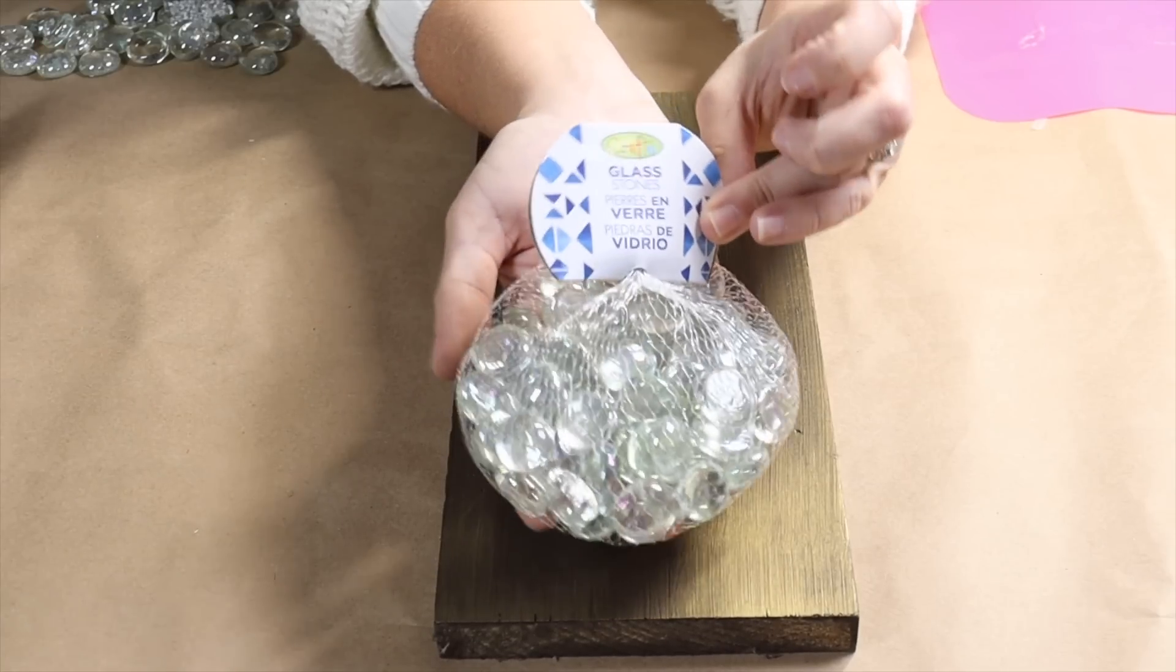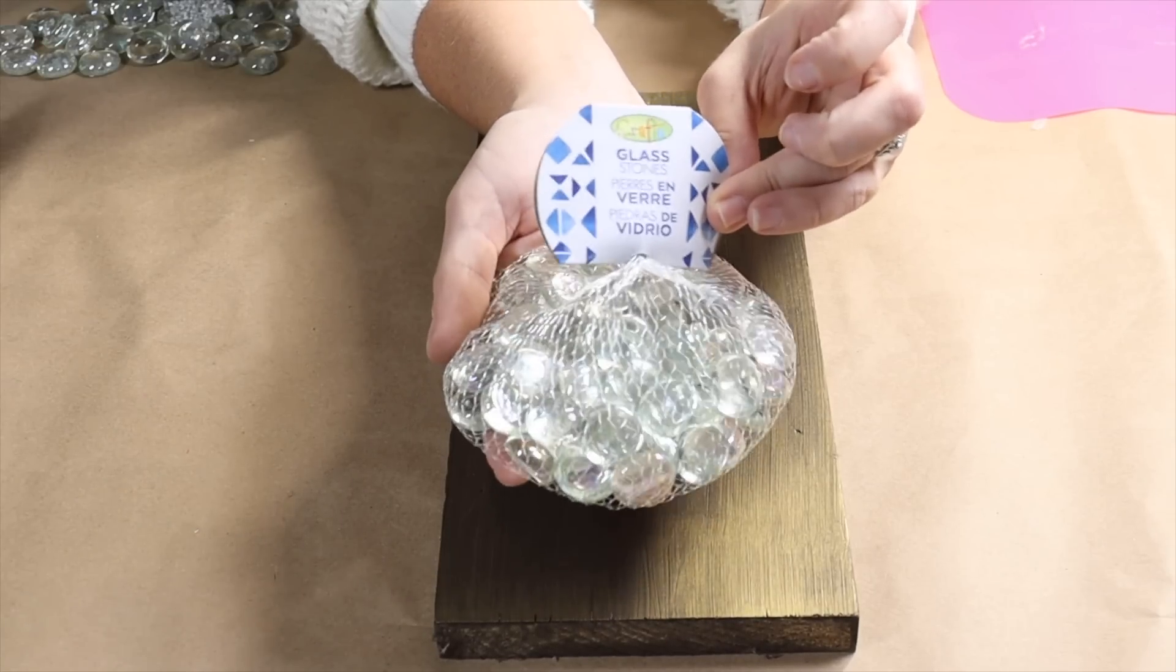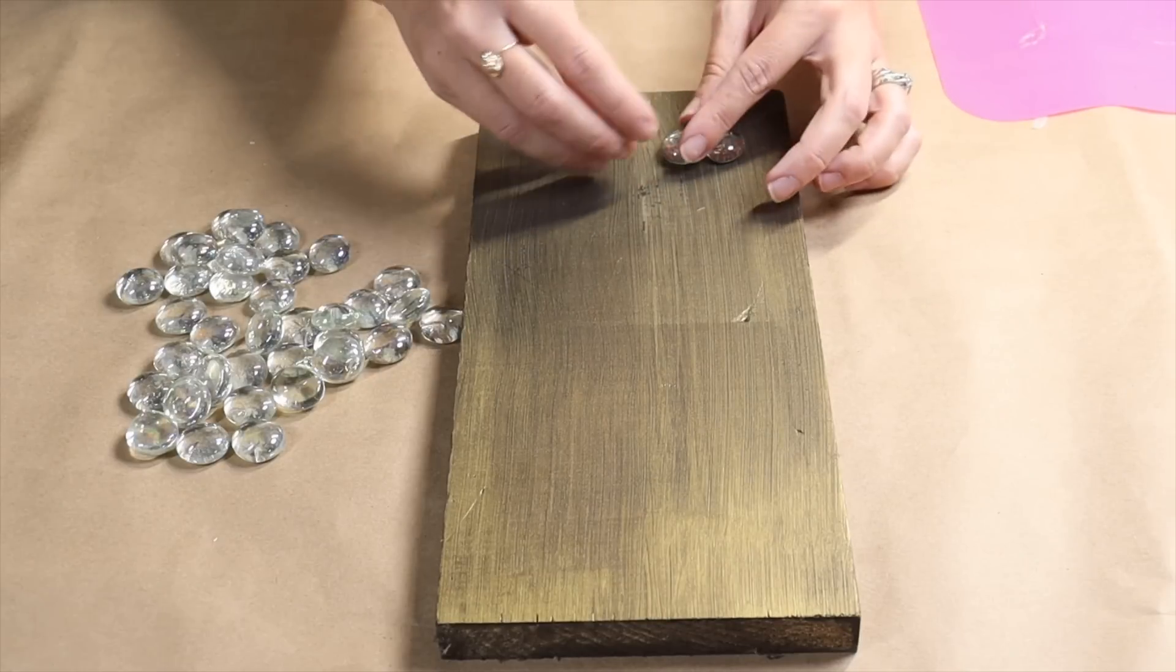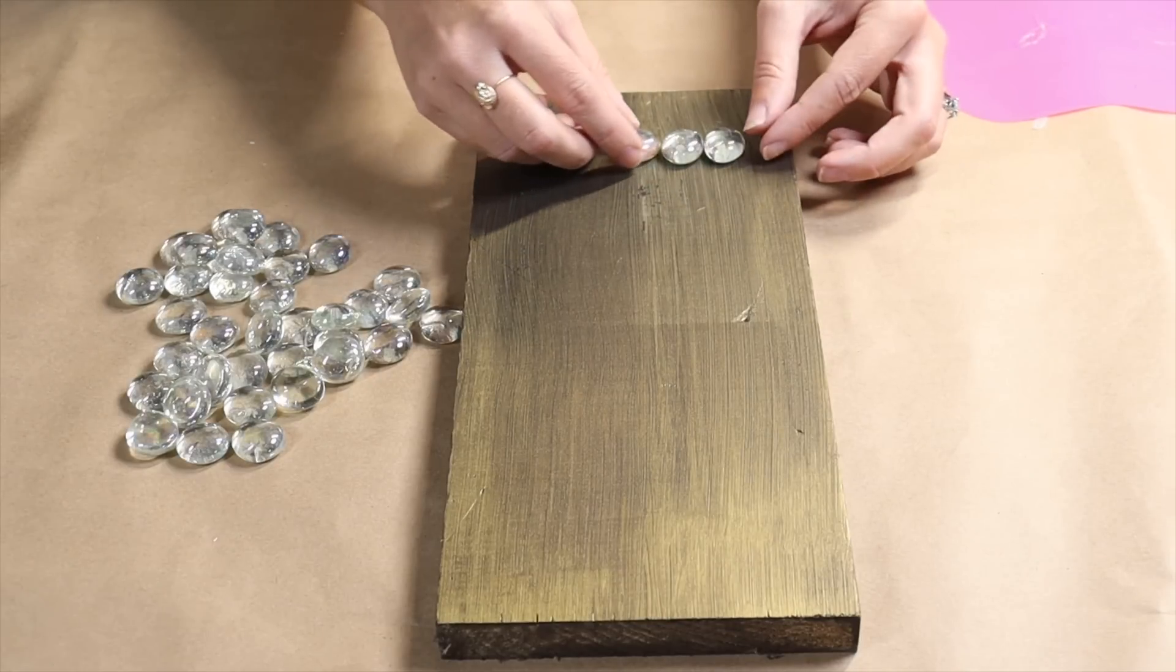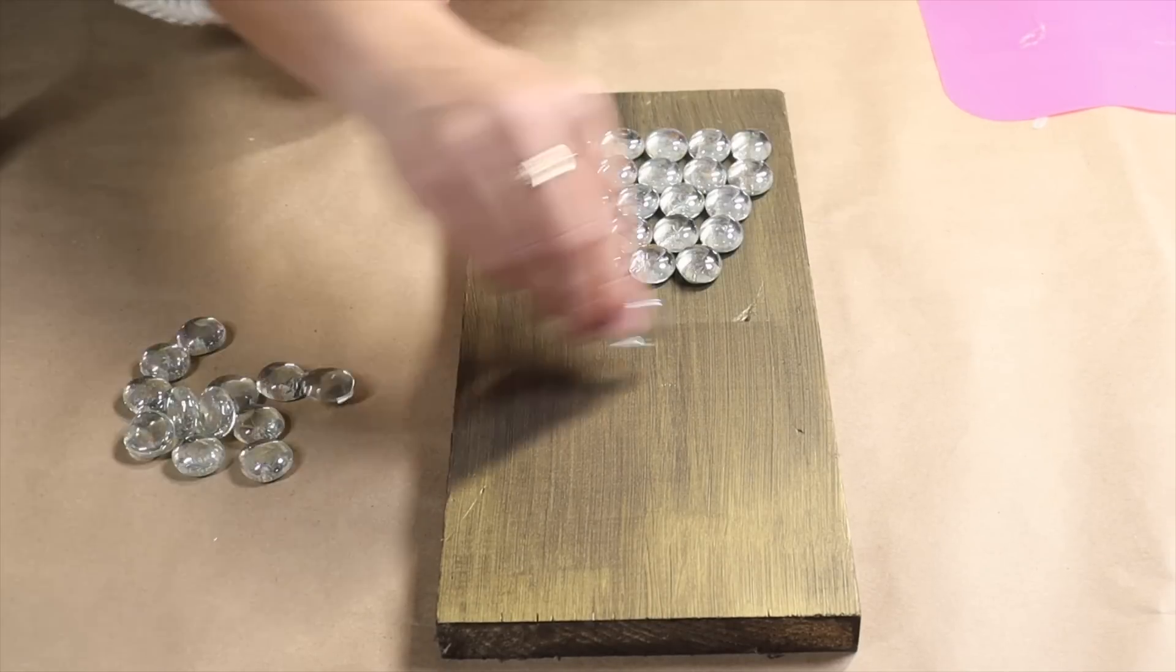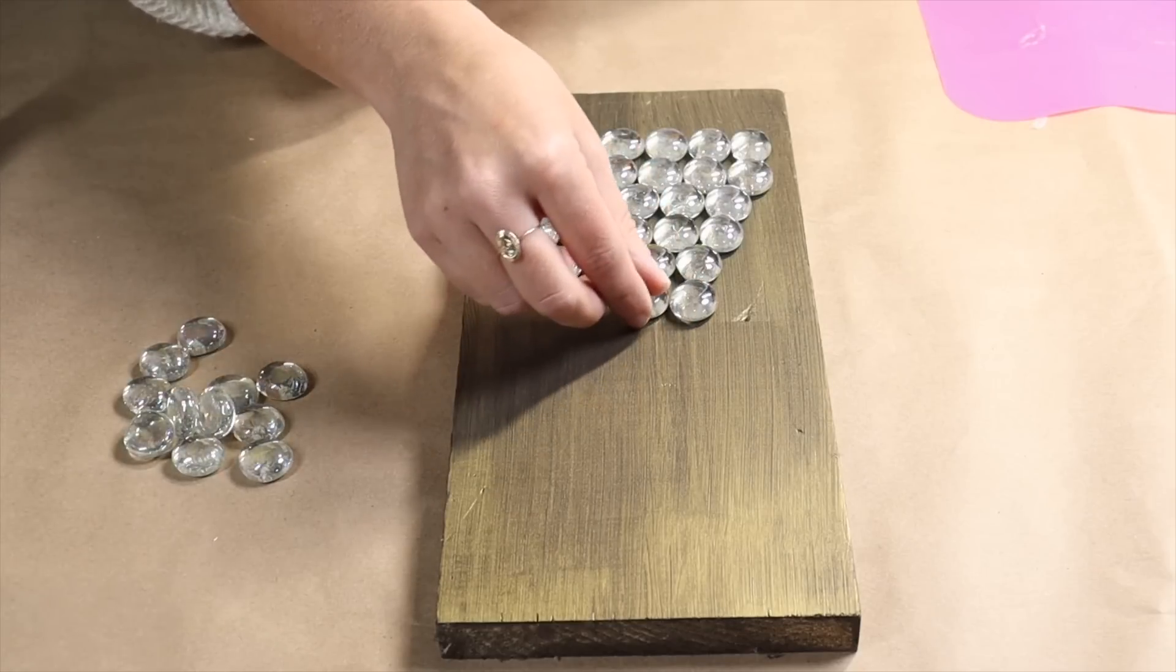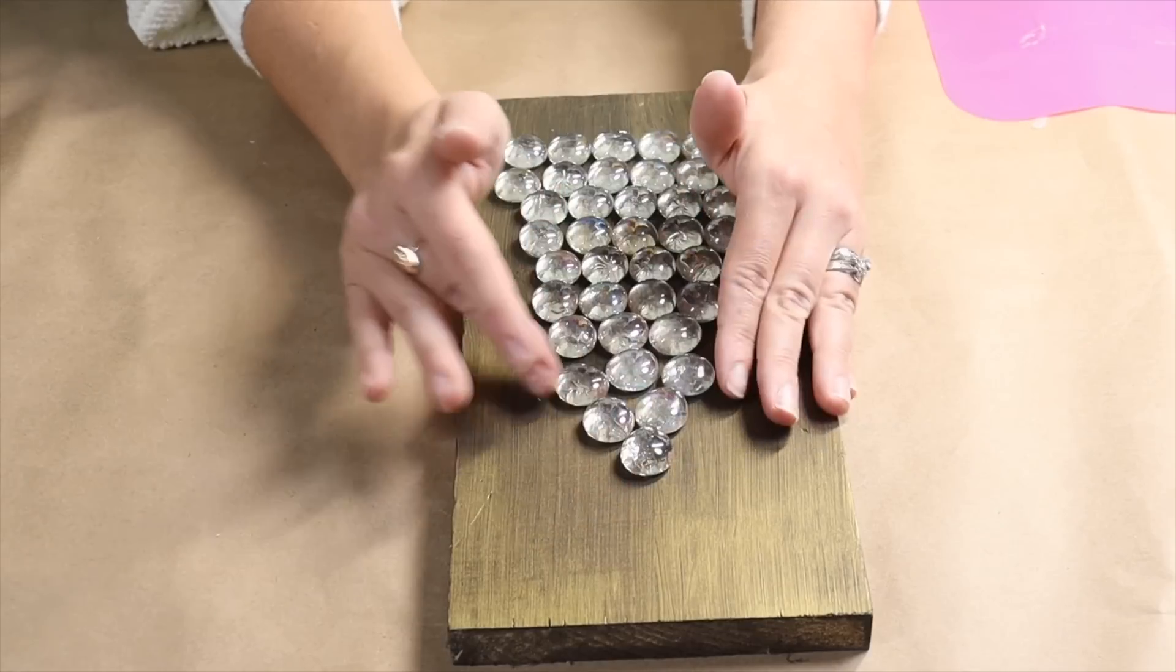Then I'm going to take these glass beads that I picked up at my local dollar store, and I'm going to begin making a Christmas tree shape. I'm just going to line them up, starting with the larger row at the bottom and just working my way up to the top.